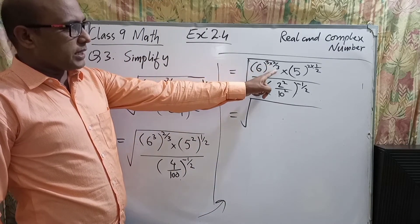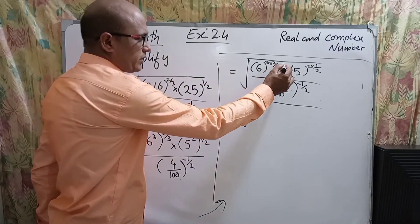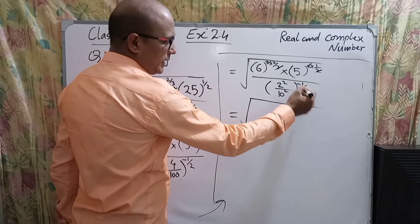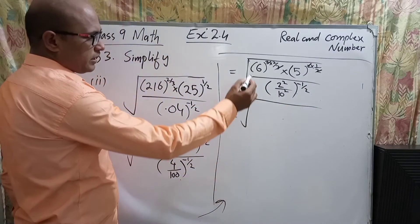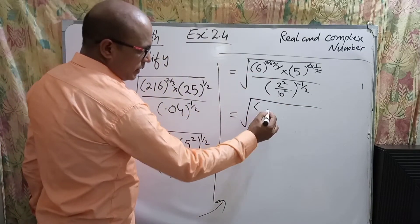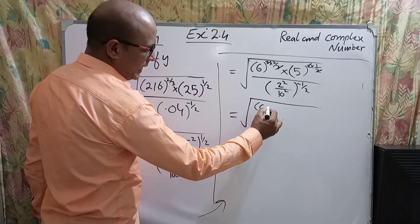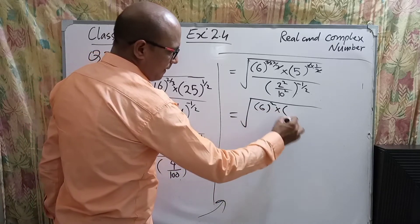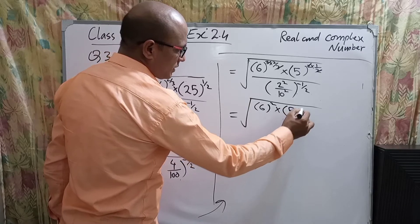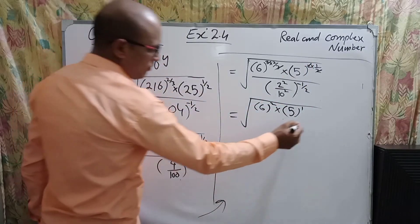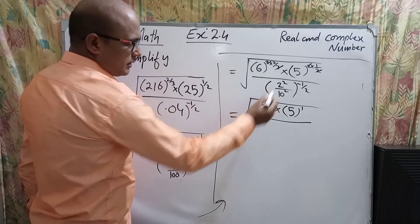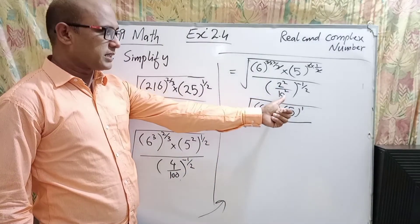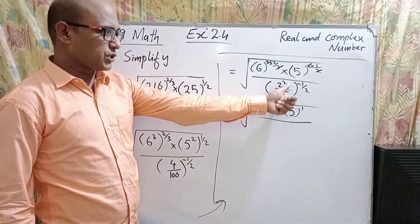Now check: in the numerator and denominator the powers that are the same will cancel. In the numerator we get 6 power 2 and 5 power 1. Both 2 and 10 in the denominator have the same power — square — so we can combine them.